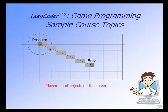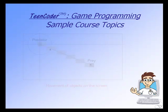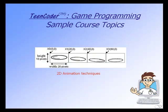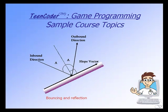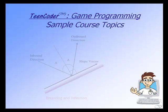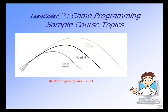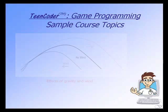In this course, we teach various types of object movement, how to detect collisions between objects, how to create 2D image animations, simple game physics like bouncing and reflection, how to create and solve mazes, and how to simulate the effects of wind and gravity in a game program.